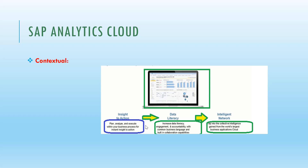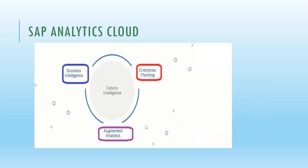SAP Analytics Cloud is contextual — based on the data it can prepare various charts, dashboards, and boardrooms, plan the data, and provide actionable insights to employees and business users. It also supports data literacy, increasing engagement and accountability with a common business language. With insight-to-action and data literacy capabilities, it forms an intelligence network combining data from different business applications and areas worldwide in the cloud.